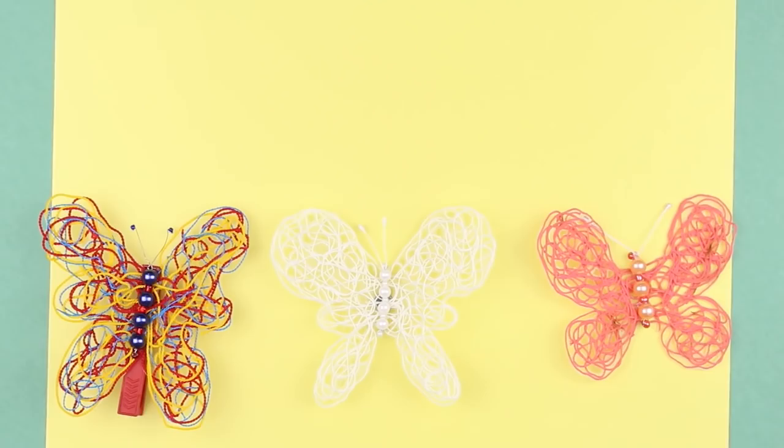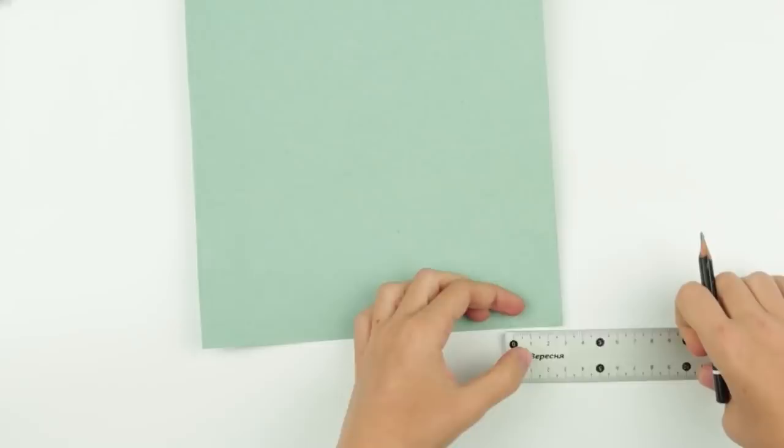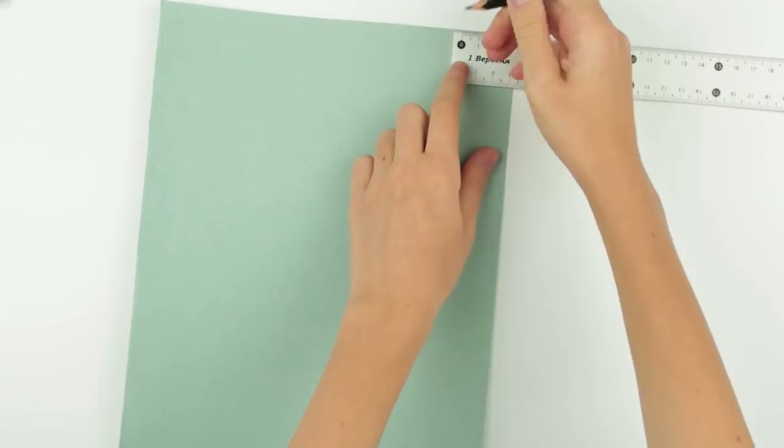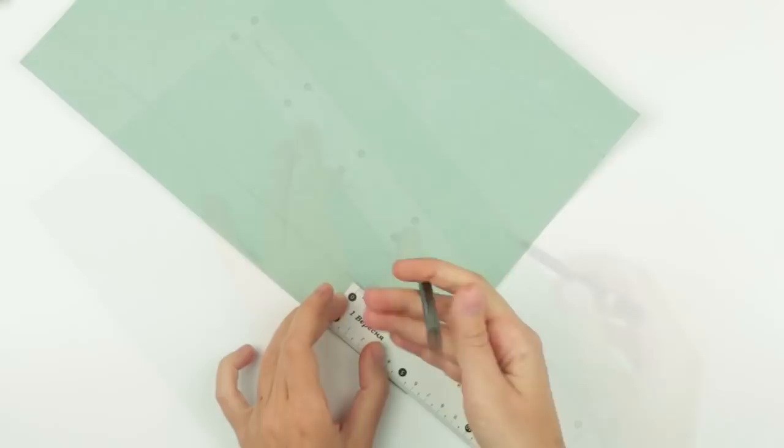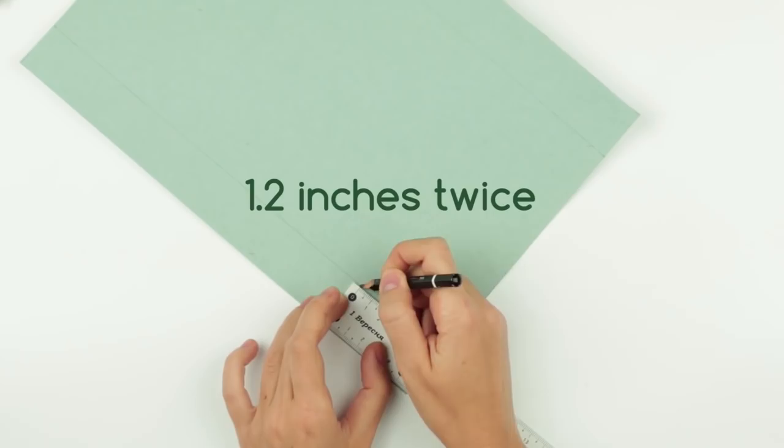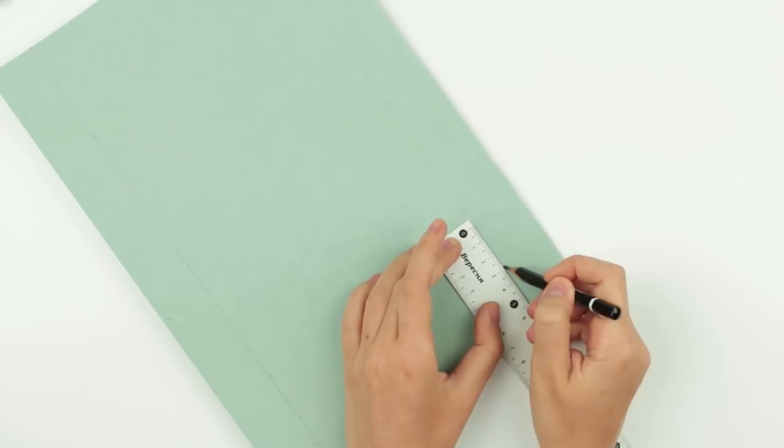In today's tutorial, we will show you how to make a gift box using cardstock. Take A4 size cardboard to make a gift box. Mark 1.2 inches from the edge on all sides. Connect the marks using a ruler and a pencil. Measure 1.2 inches twice on the lines you've got. Be careful to make the marks an equal distance from the edge. Otherwise, you may fail to make the box.